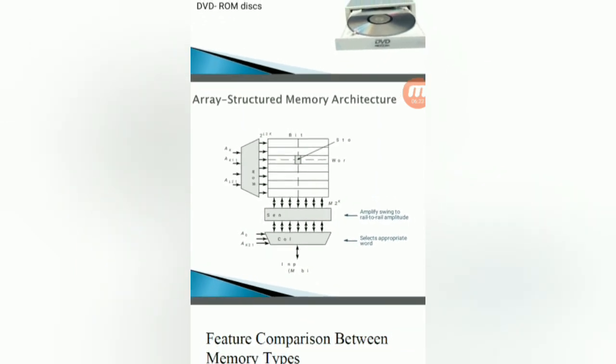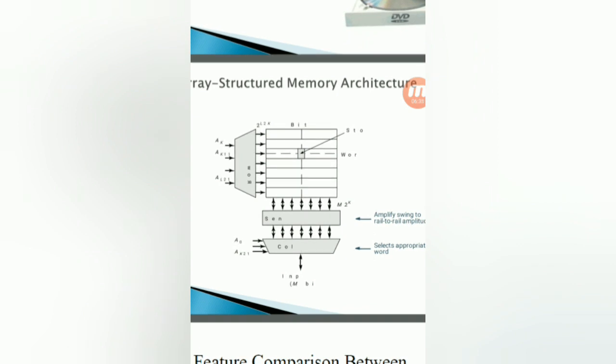So the important thing is how to find out the address in an array-structured memory architecture. This is a repeated question for JNTU. Explain the memory accessing or memory architecture. Here we can show the block diagram of memory architecture. See, in order to find out a particular address, the total address is divided column-wise and row-wise. In case of row-wise, some inputs are given, and column-wise, some inputs are given. Then we can go for amplifying the sensitivity. Sensitivity means to find out the correct row and column.